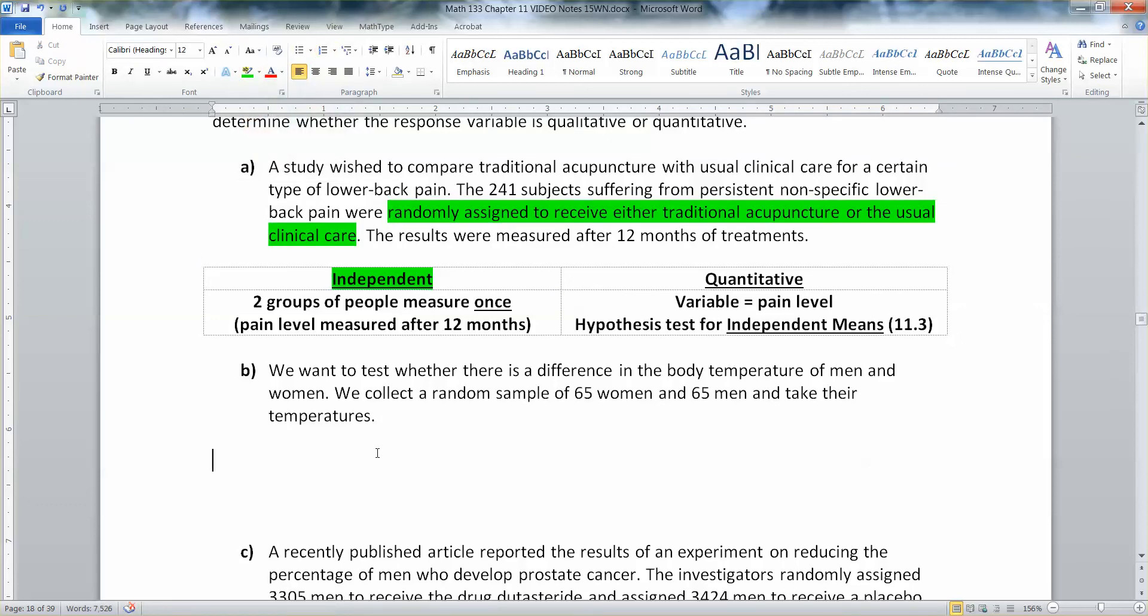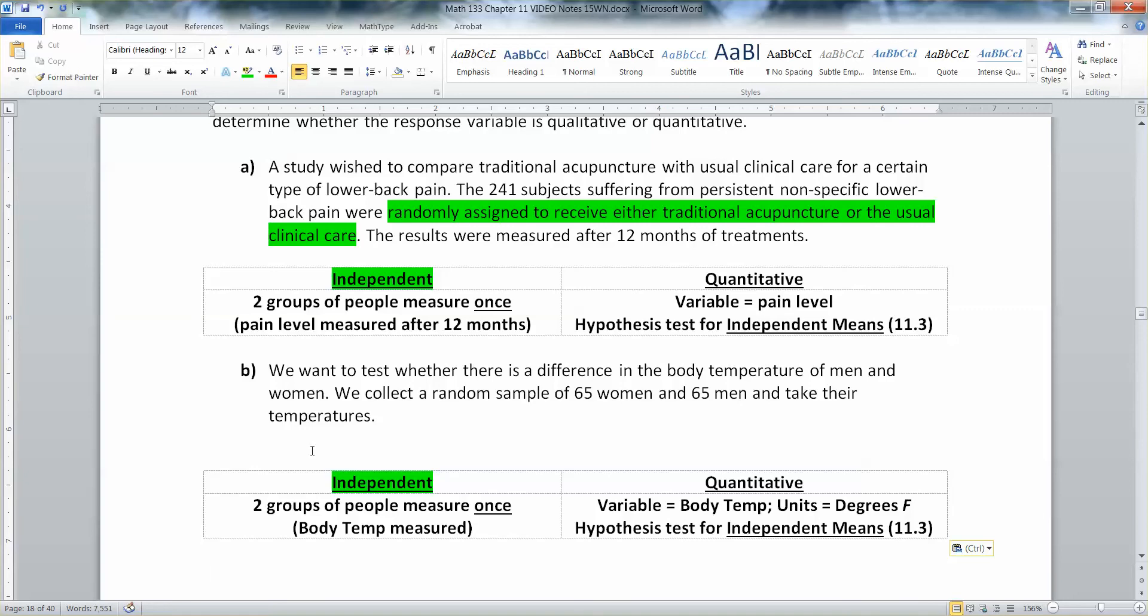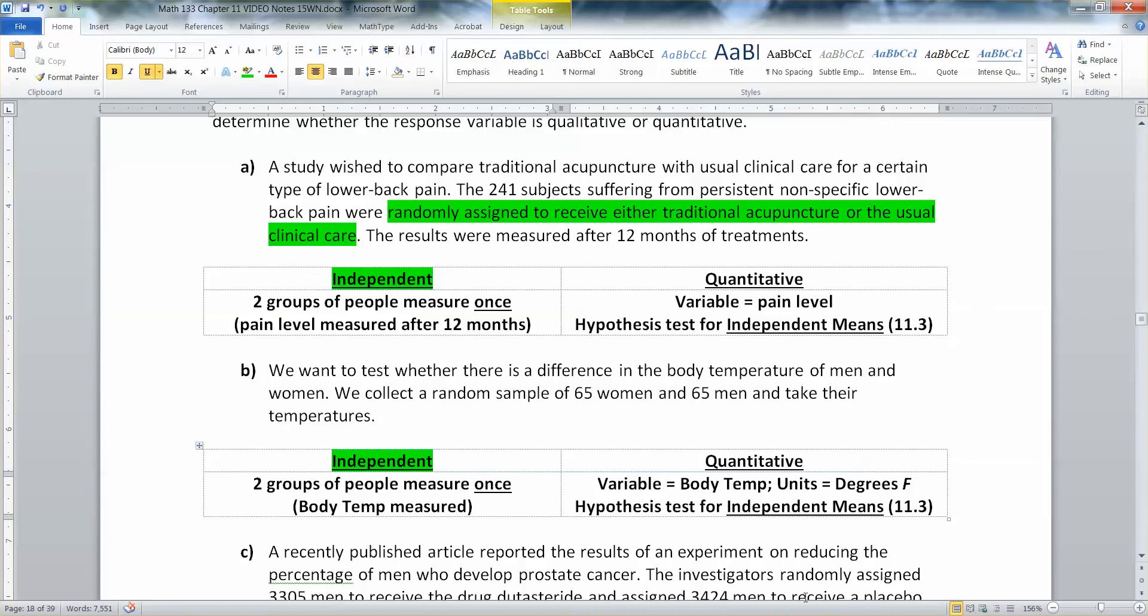So since they're not husbands and wives or brothers and sisters, that would be independent. It's two groups, male and female, measured once. And the variable, which is body temperature, is completely quantitative. Its units would be in degrees, right? Degrees Fahrenheit if you're in the U.S. And that means that you'd be conducting an independent test for two means. Just like the one above, which means you'd be in section 11.3.